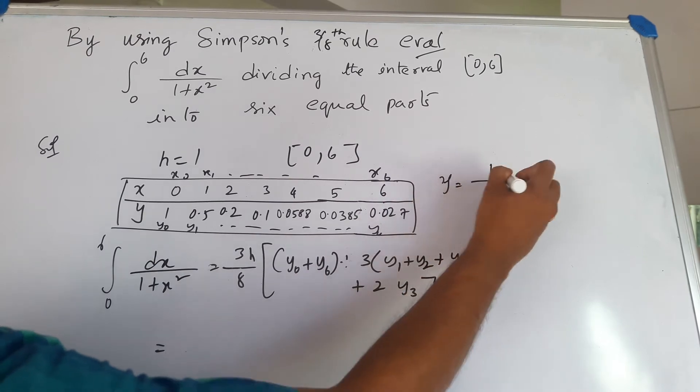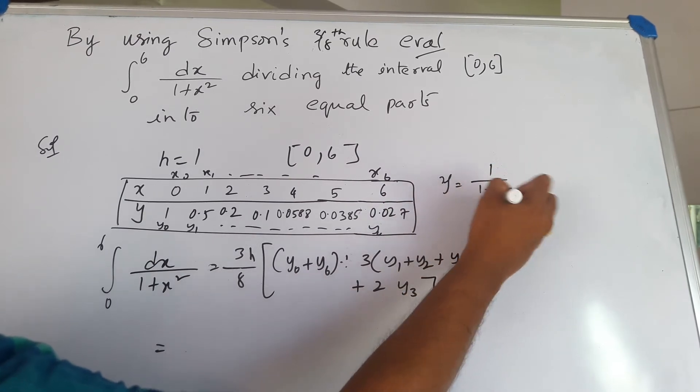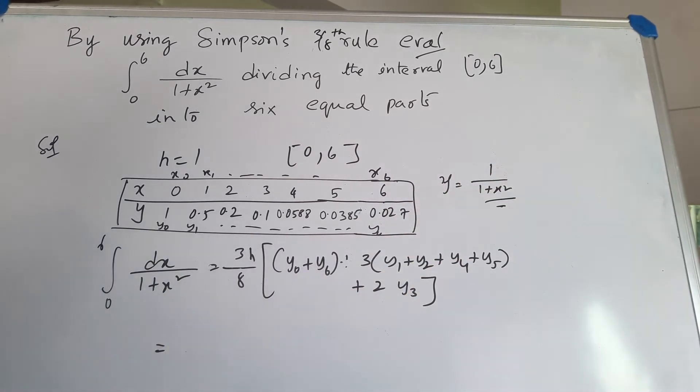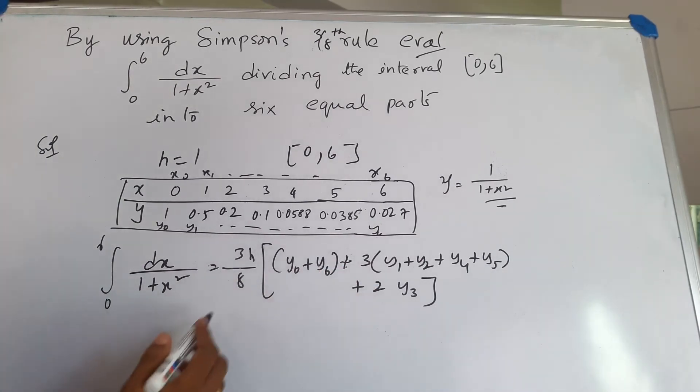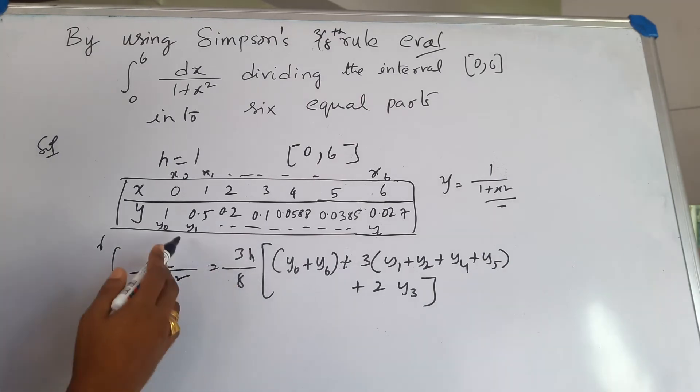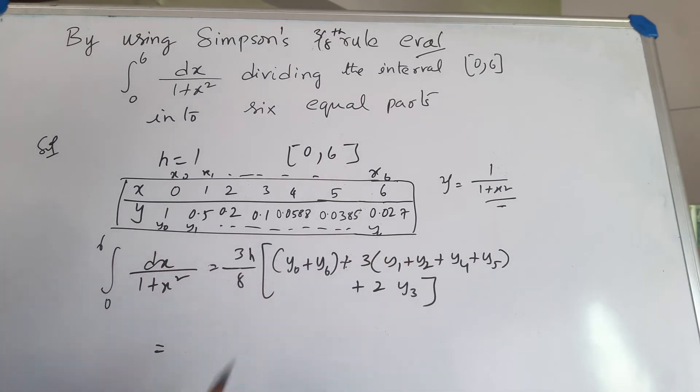Y is equal to 1 divided by 1 plus x squared. Substituting this, I get these values. The formula corresponding to Simpson's 3/8 rule: when you substitute all these values of y0, y1 through y6, I will get the answer as 1.3570.